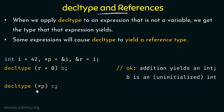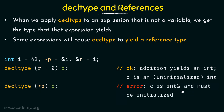Here I am saying decltype(*p) and then c. We know that p is a pointer type, but when we dereference a pointer within decltype like this, it is going to yield the reference of p — that is going to be an integer reference. Because of that, c is also going to be an integer reference type. And as we already said, when a reference type is declared, it must be initialized. Since c is not initialized here, it is going to throw an error.